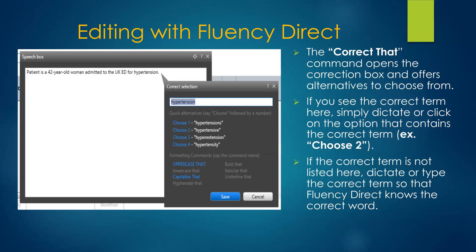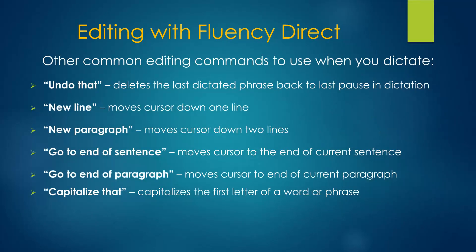Fluency Direct will then learn the correct word. Other common editing commands include Undo That, which deletes the dictation back to the last pause. New Line moves the cursor down one line — this is a fast way to create a patient problem list. New Paragraph moves the cursor down two lines. Go To End Of Sentence moves the cursor to the end of the current sentence, while Go To End Of Paragraph moves the cursor to the end of the current paragraph.